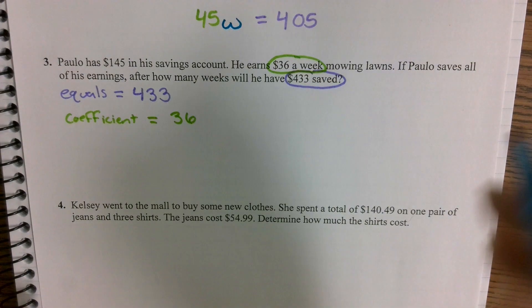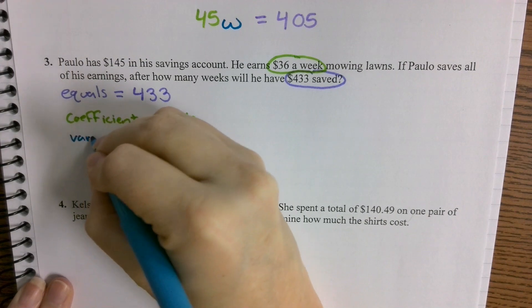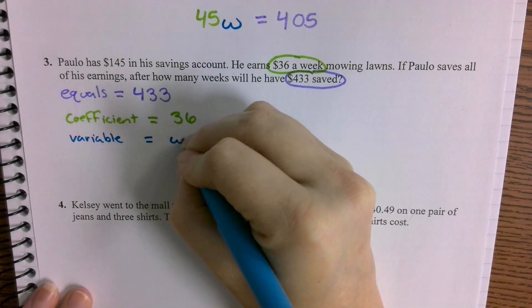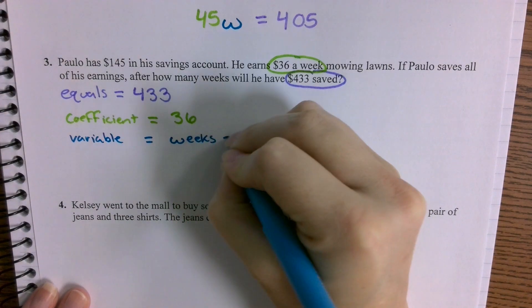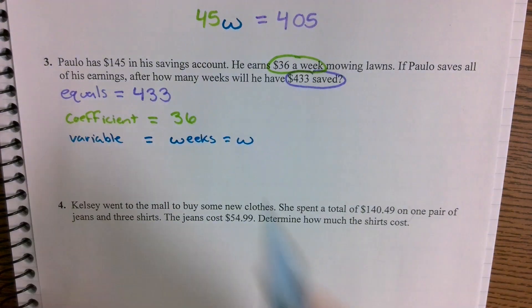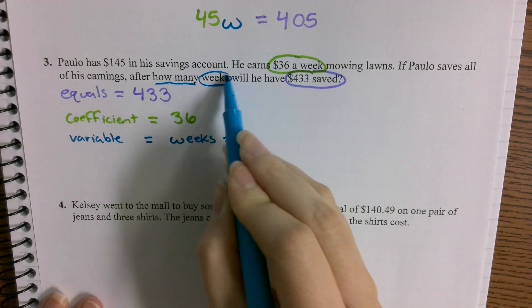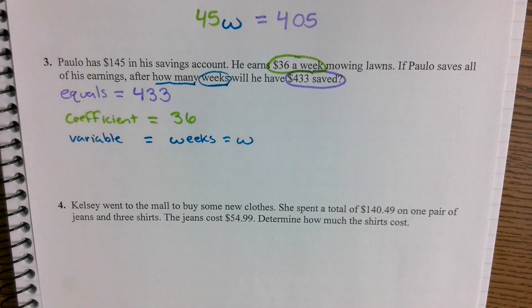Again, each week. So our variable is going to be weeks or W. Because we want to know how many, right? The question we've been asking is how many weeks. So that's what we're looking for. That's what's the unknown. That's the W.